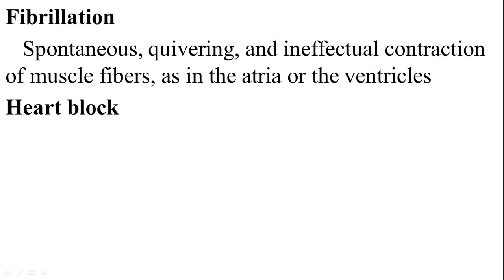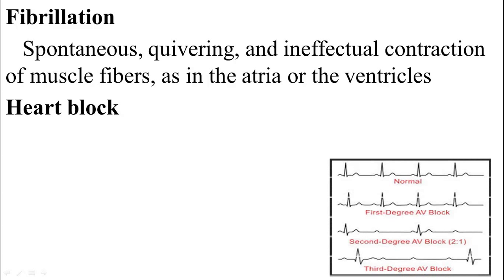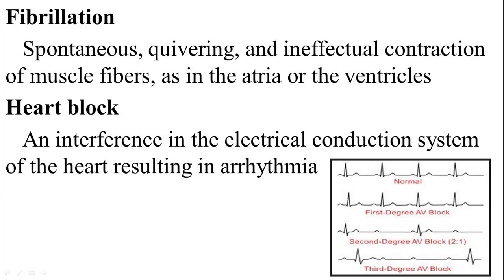The heart block happens in the cardiac conduction system of the heart. A normal ECG is the baseline. The first degree atrioventricular block, second degree atrioventricular block — there are two pathways, one QRS complex, and the third degree AV block, where the depolarization of the AV node and the depolarization of the ventricles separate. Heart block is an interference in the electrical conduction system resulting in arrhythmia.